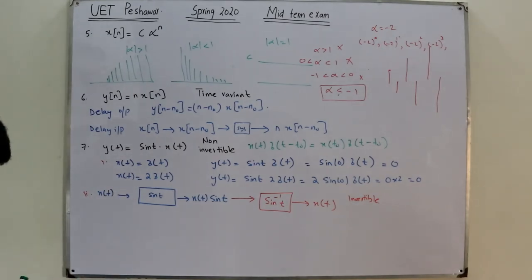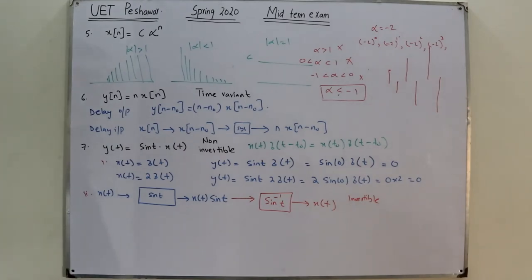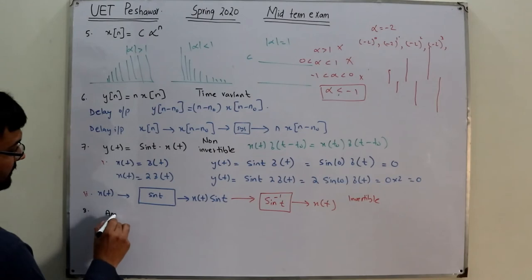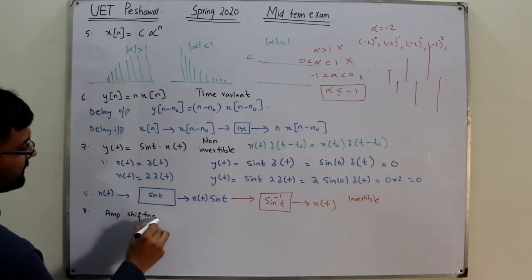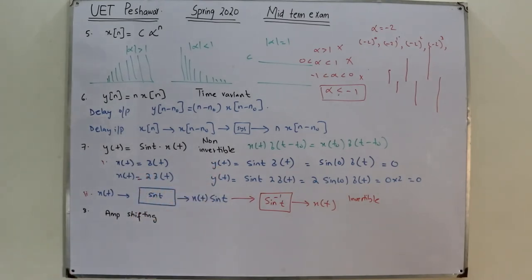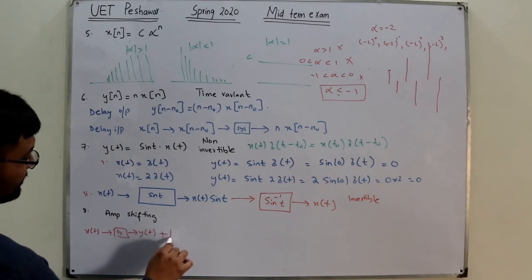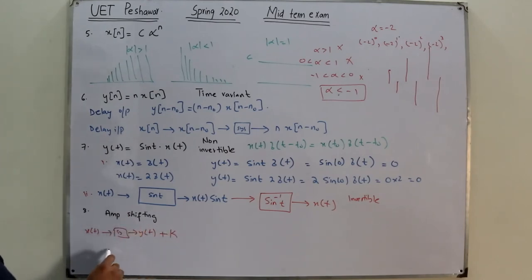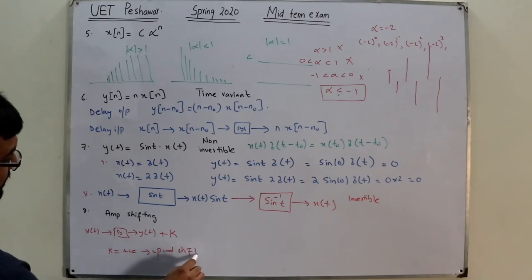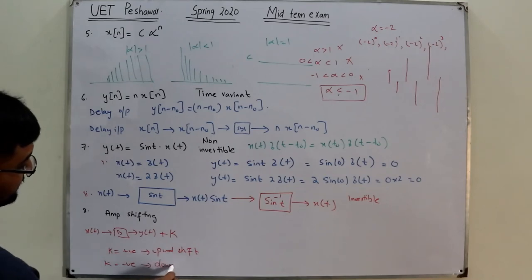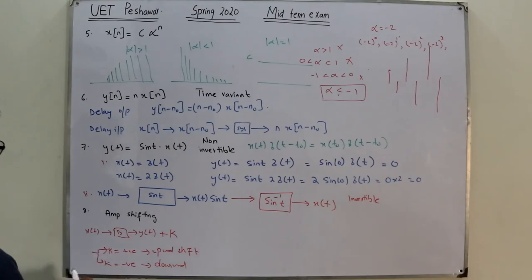Question 8: the difference between amplitude shifting and amplitude scaling. In amplitude shifting, you add a constant k to the output: y(t) = x(t) + k. If k is positive, the signal shifts upward; if k is negative, it shifts downward. The waveform shape remains the same.